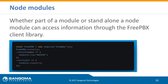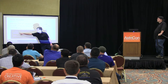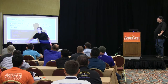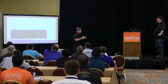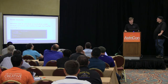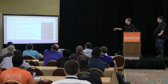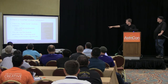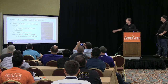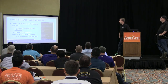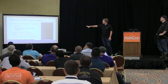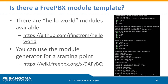Whether part of a module or standalone, a Node module can access information through the FreePBX client library. What we're doing here is just require FreePBX - that's just a module in Node. Then we just hit FreePBX connect, and once we're in the then statement, we have everything I talked about: database access, AMI, and configuration parameters from advanced settings. There's also a module in that wiki where it basically creates a module in FreePBX - you just tell it what you want it to do.